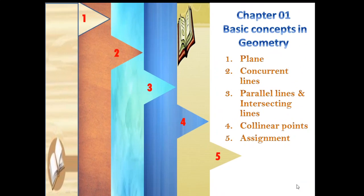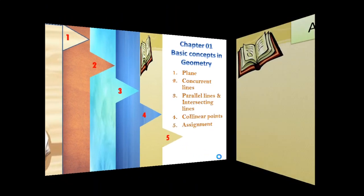We have now completed the lesson. We have covered all the topics: plane, concurrent lines, parallel lines and intersecting lines, and collinear points. This completes the entire chapter on basic concepts in geometry. Now we have an assignment based on all these four topics.